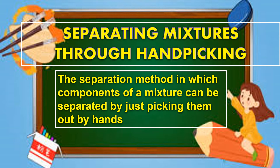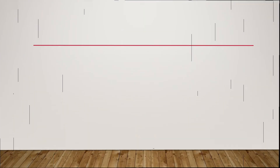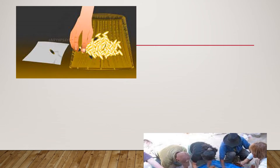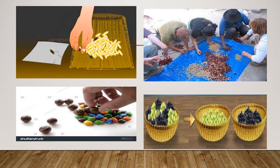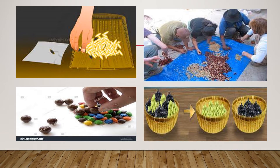Separating Mixtures Through Hand Picking. Hand picking is the separation method in which components of a mixture can be separated by just picking them out by hands. Here are some examples of separating mixtures through hand picking.